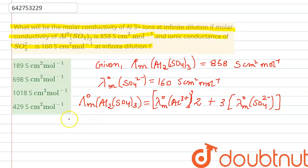Now we will substitute the value to find out the answer, but before that, we need to arrange it. By arranging, we will find that lambda m0 for aluminum 3 positive will come out to be lambda m0 for aluminum sulfate minus 3 times lambda m0 for sulfate ion, divided by 2.